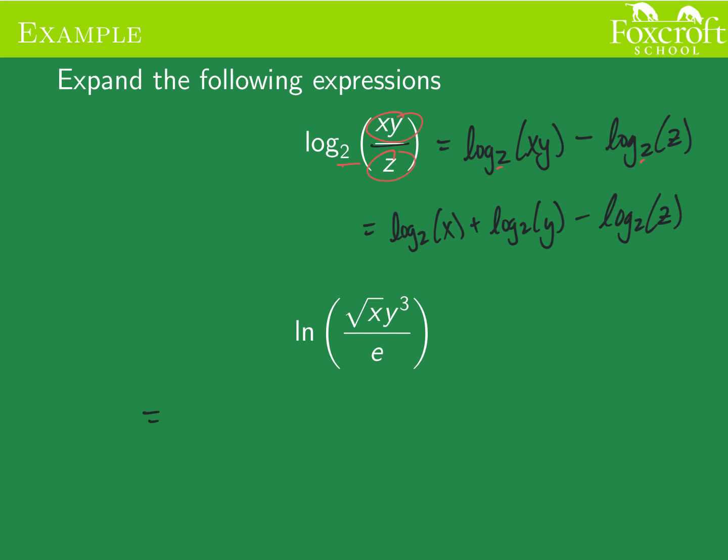The next one's really similar. There's that division bar, so I can subtract that as two separate logs: ln(√x·y³) - ln(e). Then I have multiplication, so I can rewrite this first one using addition: ln(√x) + ln(y³) - ln(e). Now for each one of these little parts there's a different thing you can do to simplify. So the most obvious one might be the middle one - it had this exponent of three, and we saw that last log rule on the other side. This is now three natural log of y, so that three can come out in front of the natural log like that.